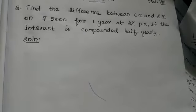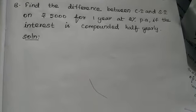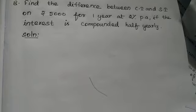Now see the question: find the difference between CI and SI on rupees 5000 for 1 year at 2% per annum if the interest is compounded half yearly.